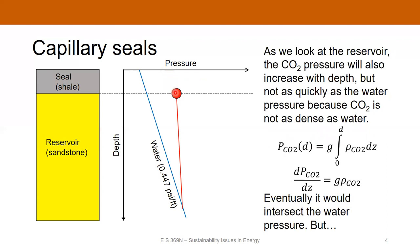Now below that point, what's going to happen is that the pressure of the CO2 phase will also increase, but it's not going to increase as quickly as the water phase pressure does, because CO2 is less dense than water. We can represent the pressure of the CO2 at depth by integrating density as a function of depth and multiplying by gravity. The change in CO2 pressure with depth is equal to gravitational acceleration times the CO2 density. If we assume CO2 density is relatively constant over short depth increments, we can draw a straight line, showing that eventually the CO2 pressure would intersect the water phase pressure.